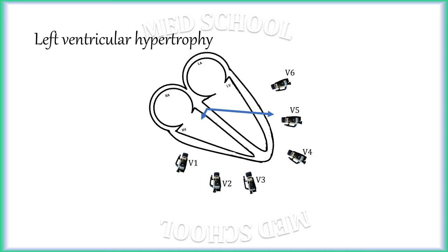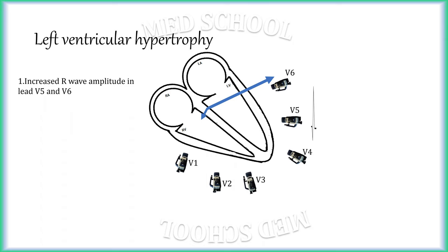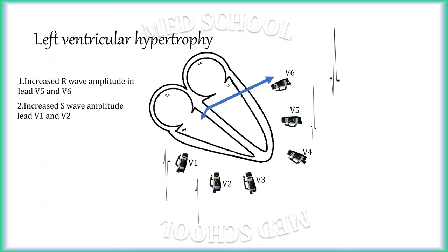In left ventricular hypertrophy, the ventricular depolarization vector becomes stronger and shifts further to the left. As the stronger vector is coming toward the V5 and V6 electrode, R wave amplitude is increased in leads V5 and V6. Similarly, as the stronger vector is going away from V1 and V2 electrodes, S wave amplitude is increased in leads V1 and V2.